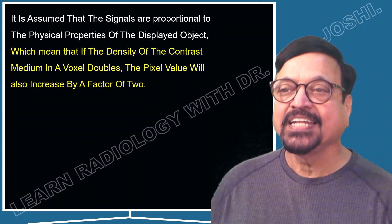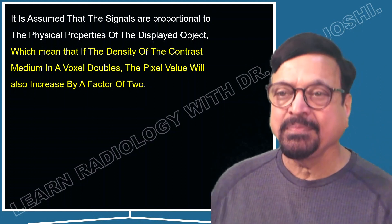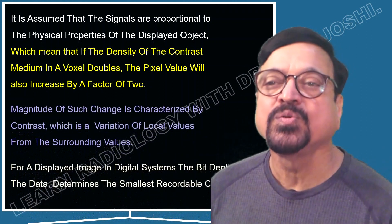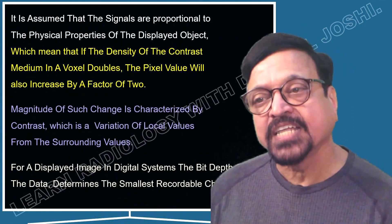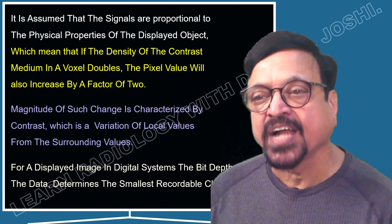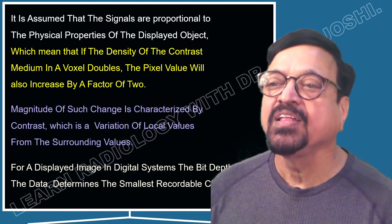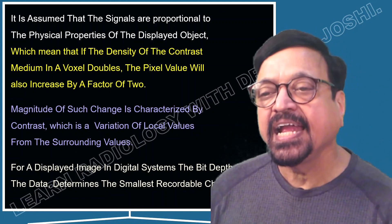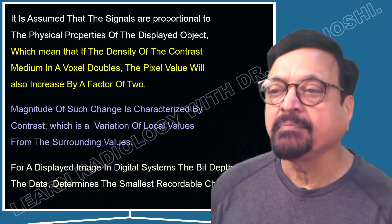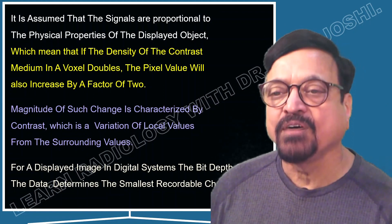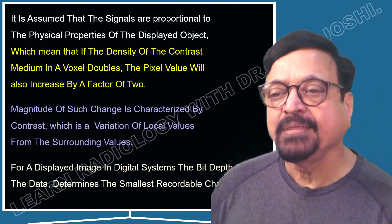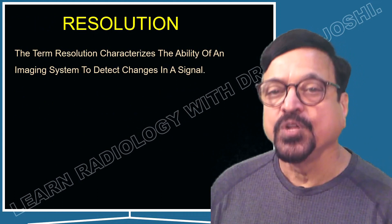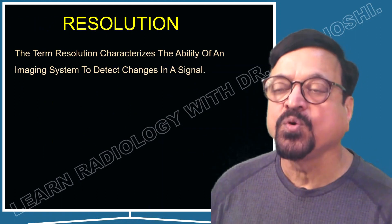This means that if the density of a contrast medium in a voxel doubles, the pixel value will also increase by a factor of 2. The magnitude of such change is characterized by contrast, which is the variation of the local value from the surrounding values. For a displayed image in a digital system, the bit depth of the data determines the smallest recordable change in resolution.